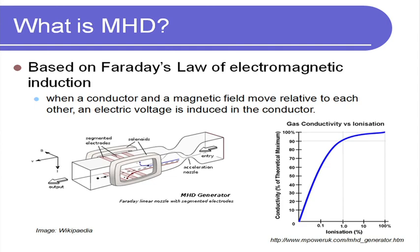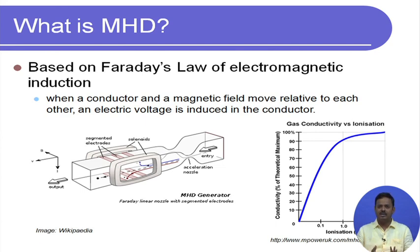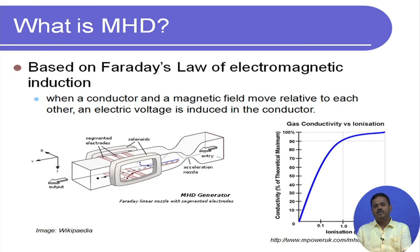Let us recall from physics Faraday's law of electromagnetic induction. What Faraday said is: if a conductor and a magnetic field move relative to each other, an electric voltage is induced in the conductor. So if you have a magnetic field and a conductor, and the conductor moves within the magnetic field — or the magnetic field moves relative to the conductor — we can give rise to an electric voltage induced in that conductor. This is the principle on which magnetohydrodynamics operates.